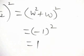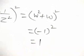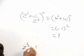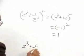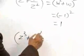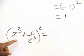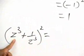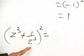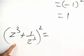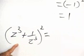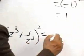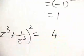Now the third term will be a little different. That is, (Z cubed + 1/Z cubed) whole squared. This will be equal to (omega cubed + 1/omega cubed). Since omega cubed equals 1, this becomes 1 plus 1 equals 2, and squared that is equal to 4.